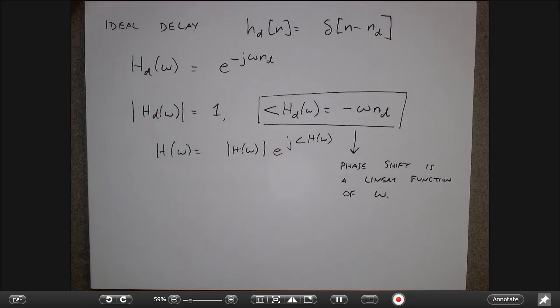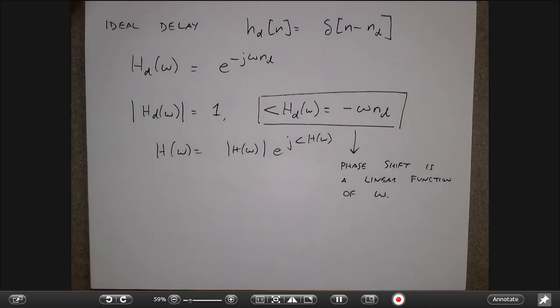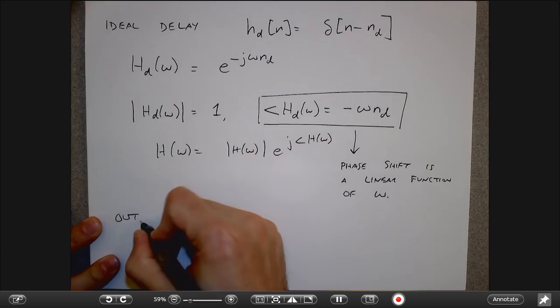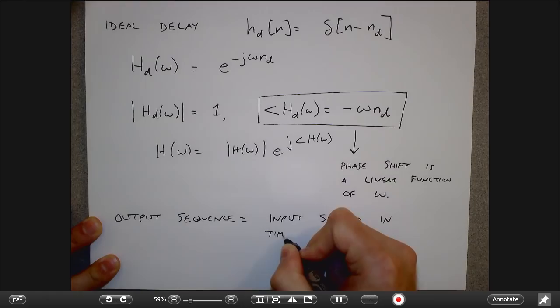The phase shift of a pure delay is a linear function of omega — that's a good thing. A filter with linear phase just delays the output by some number of units, which doesn't count as distortion. All the cosines and sines in the signal are shifted by the same delay, so their relative positions are unchanged. The output sequence is just the input shifted in time.